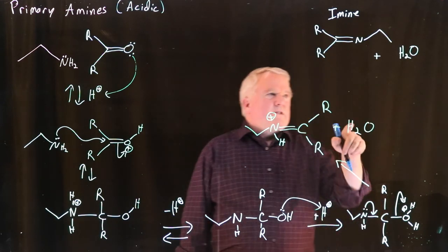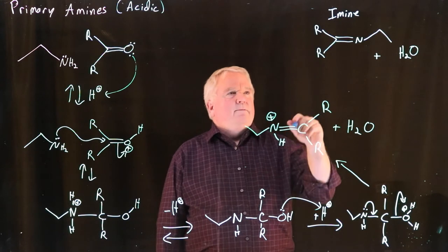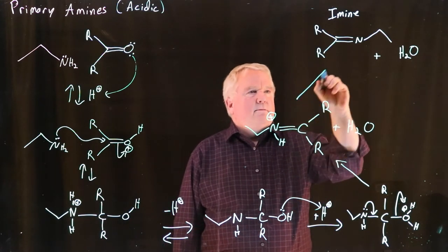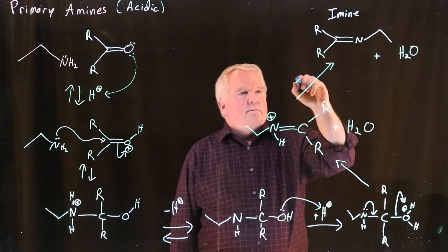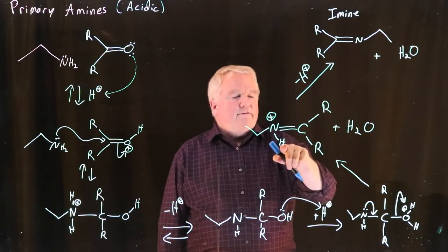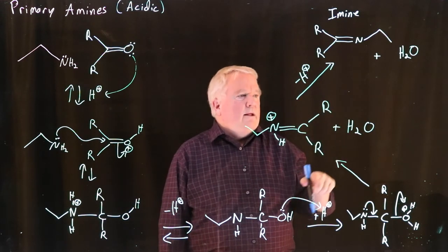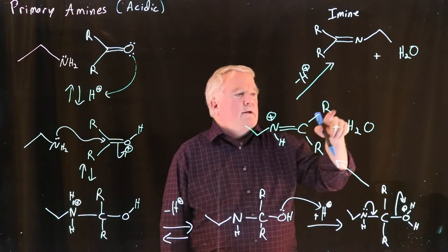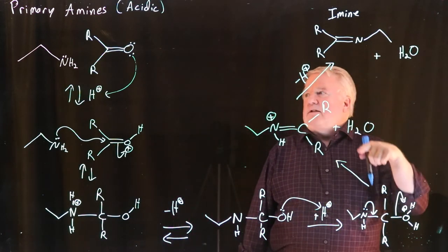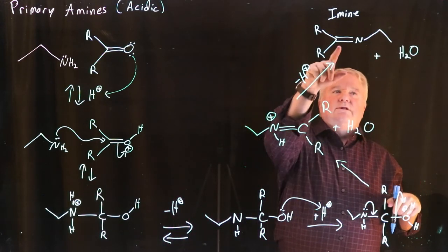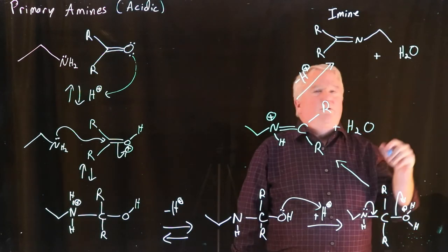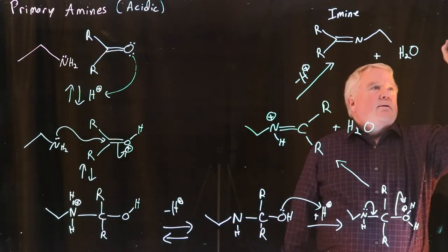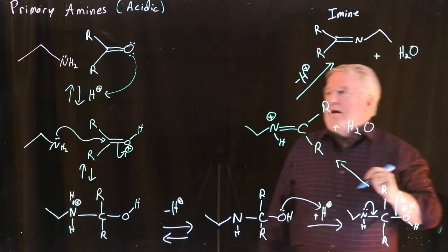We still have our proton on this nitrogen. Now, all we have to do is something has to float around. We pull off this proton, probably the water molecule, and it ends up giving us this final species, which is our imine. And a molecule of water.